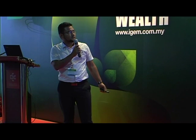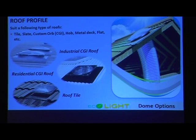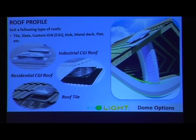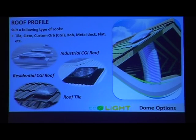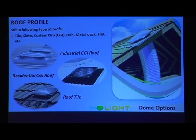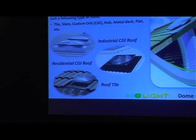We have dome options for different roof profiles. There are three industrial CGI roof types you can see in many factories and warehouses. Also residential CGI roof, and finally roof tile for residential use. In Australia, America, and Europe, people are familiar with this technology — the public uses natural light to light up their homes.